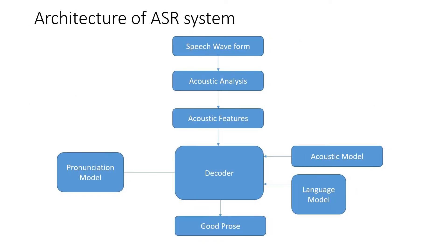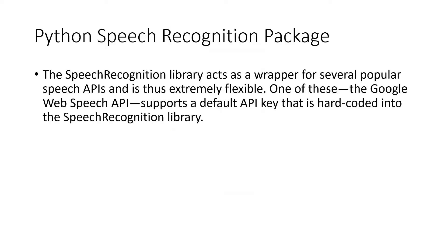This is the architecture of ASR systems we have discussed — you can watch the previous videos where each module is discussed in detail. For the implementation, we are using the Python speech_recognition package. The speech recognition library acts as a wrapper for several popular speech APIs and is extremely flexible. One of these is the Google Web Speech API, which supports a default API key that is hard-coded into the speech recognition library.